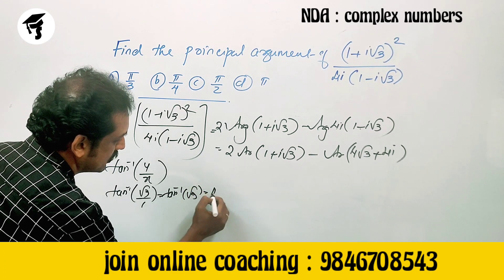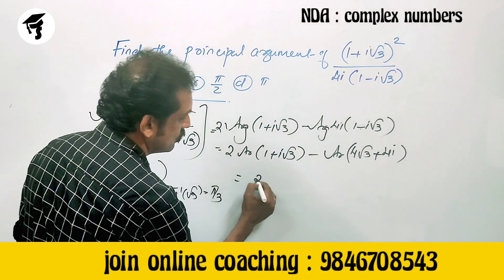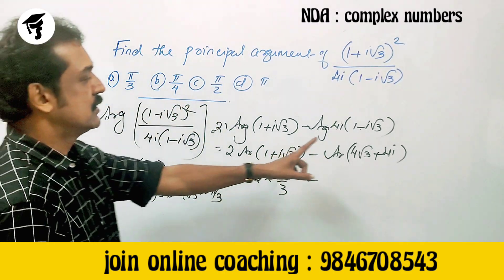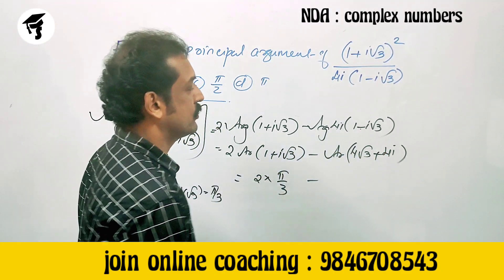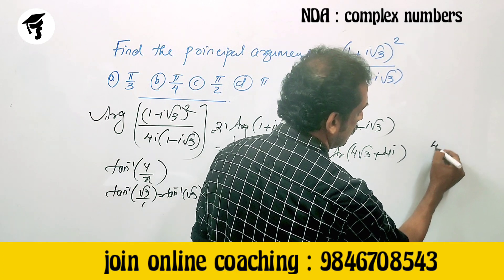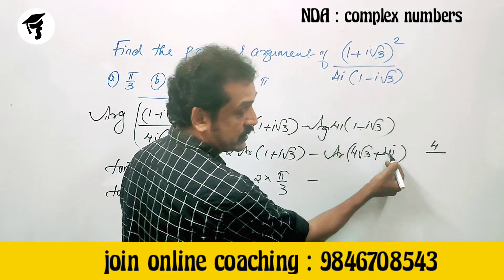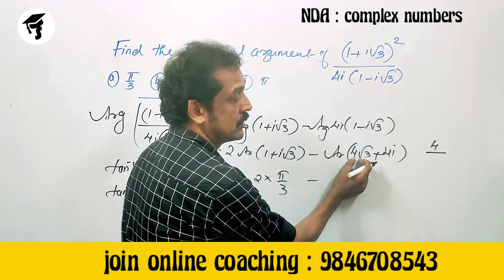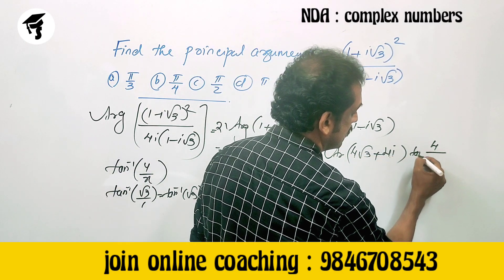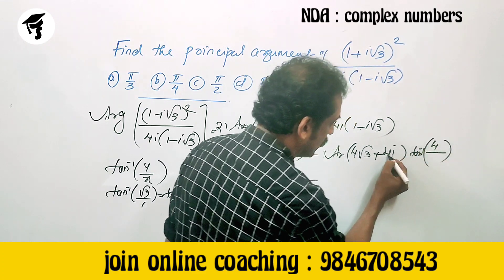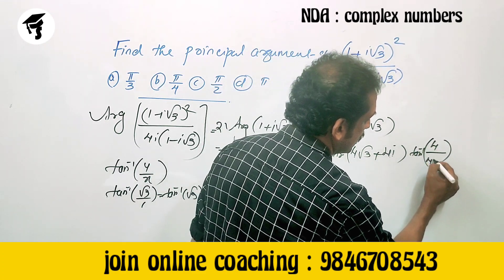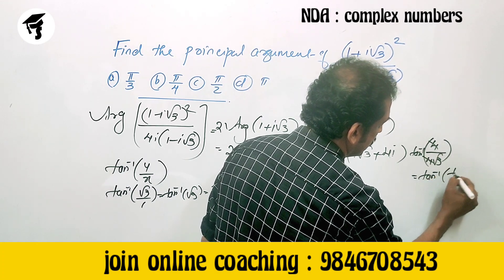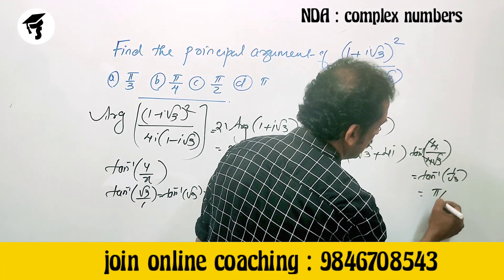Tan inverse √3 equals π/3. So the numerator contributes 2 into π/3. For the denominator, tan inverse of imaginary part by real part is tan inverse of 4 divided by 4√3, which is tan inverse of 1 by √3, equal to π/6.